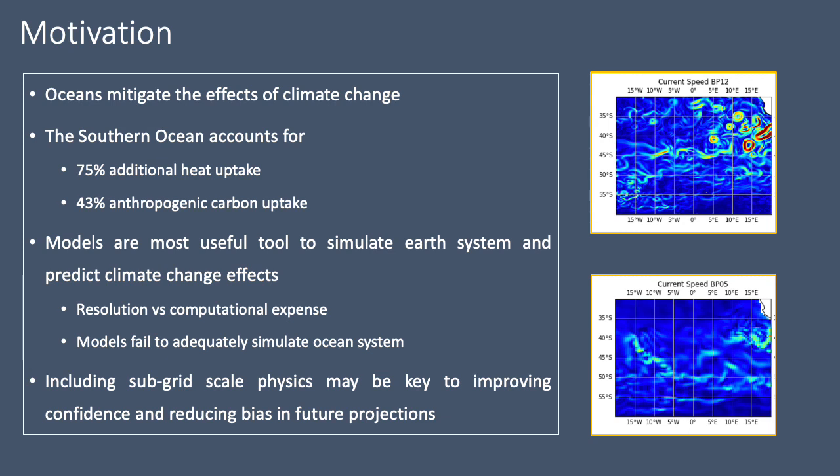Models are our most useful tool to simulate the Earth system and predict climate change effects for the future. But with increasing resolution, you incur a large computational expense. And models, particularly in the Southern Ocean, fail to adequately simulate the ocean system and have significant biases.